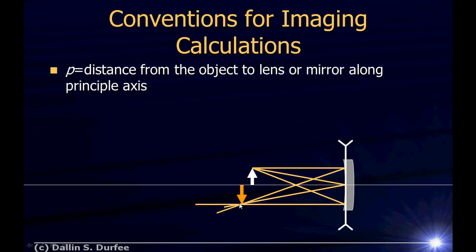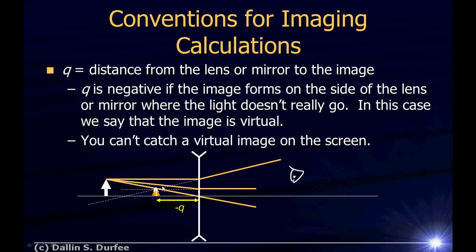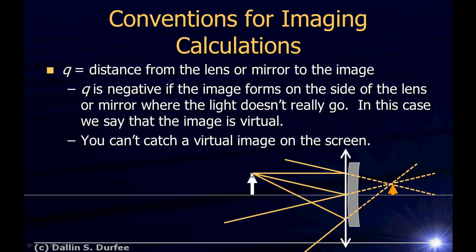It looks like the light is coming from a point, but it isn't — it just looks like it. With a real image, the light actually comes to a focus there. For a mirror with a virtual image: the light bounces off, and if I put my eye here and look, it looks like the light is coming from a point back behind the mirror. But if I put a piece of paper there, I will not capture an image. It's a virtual image. Q is negative.